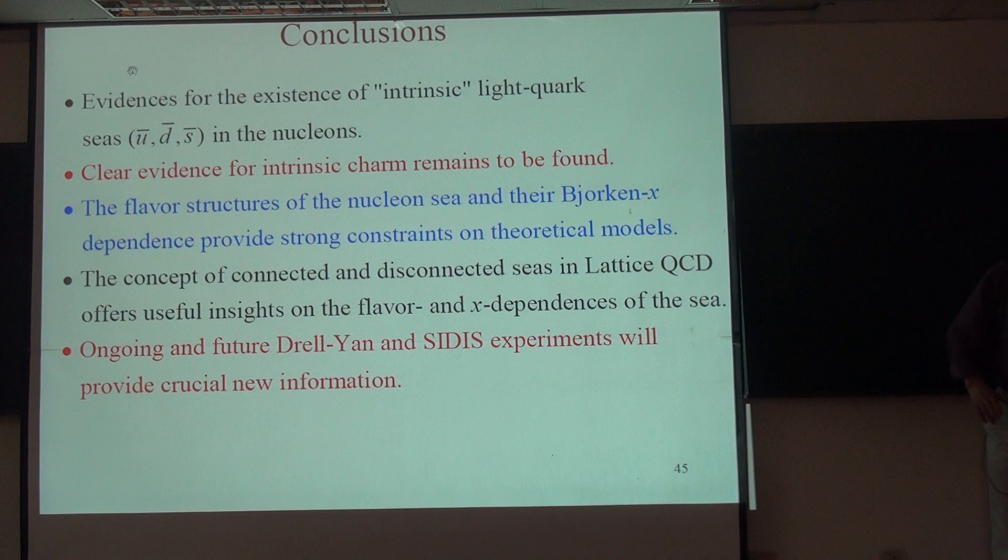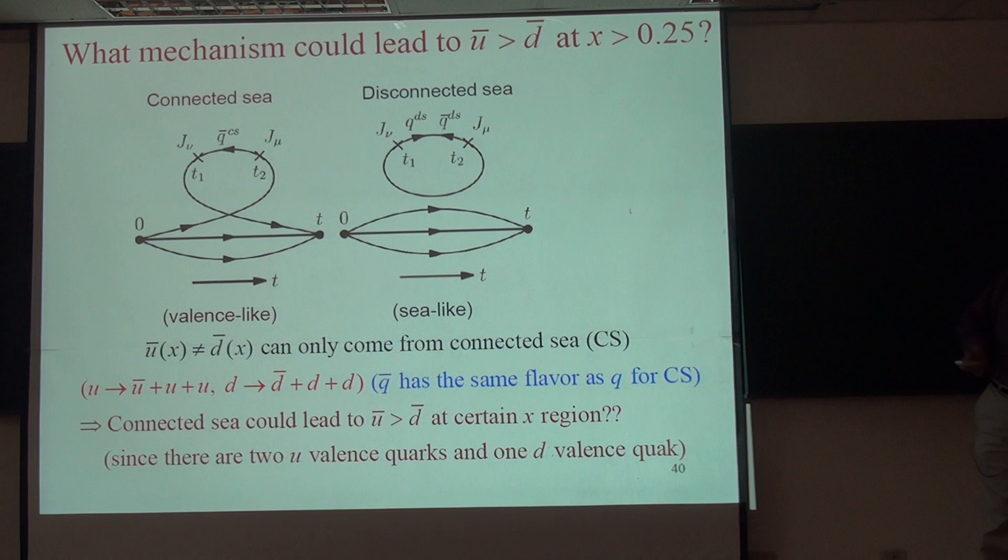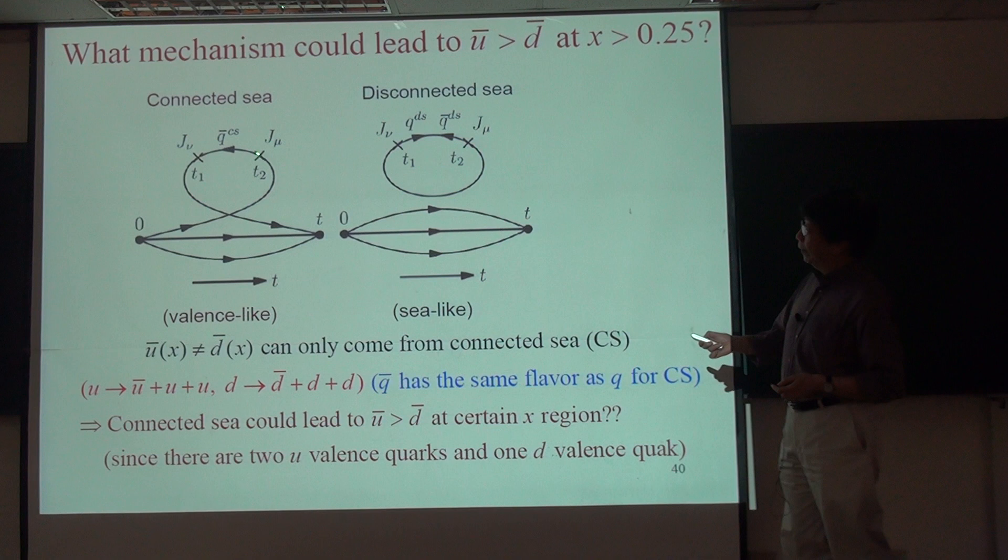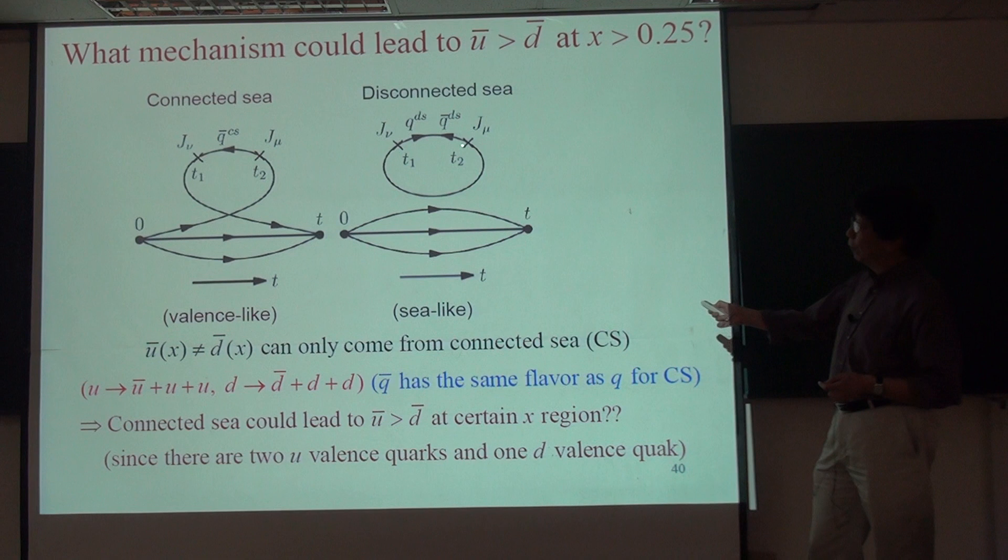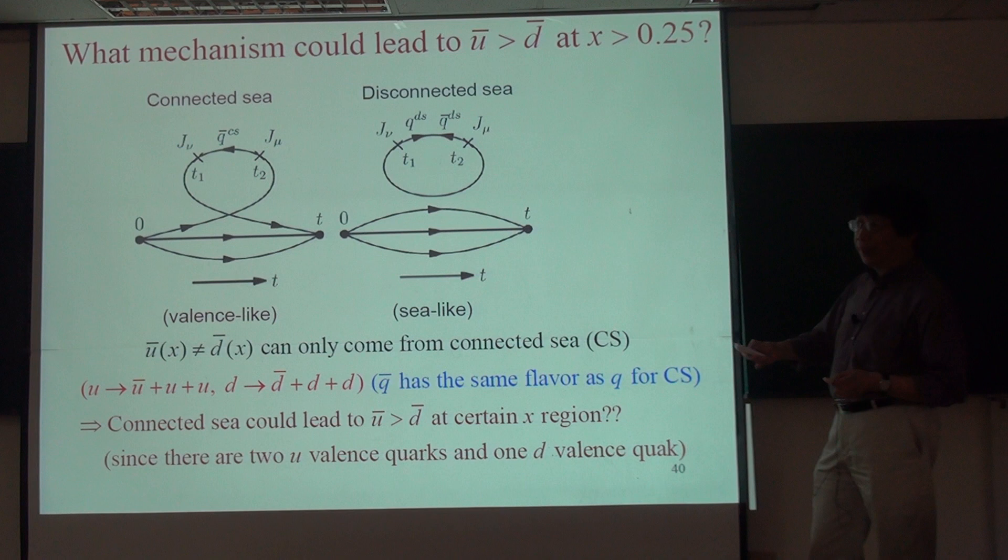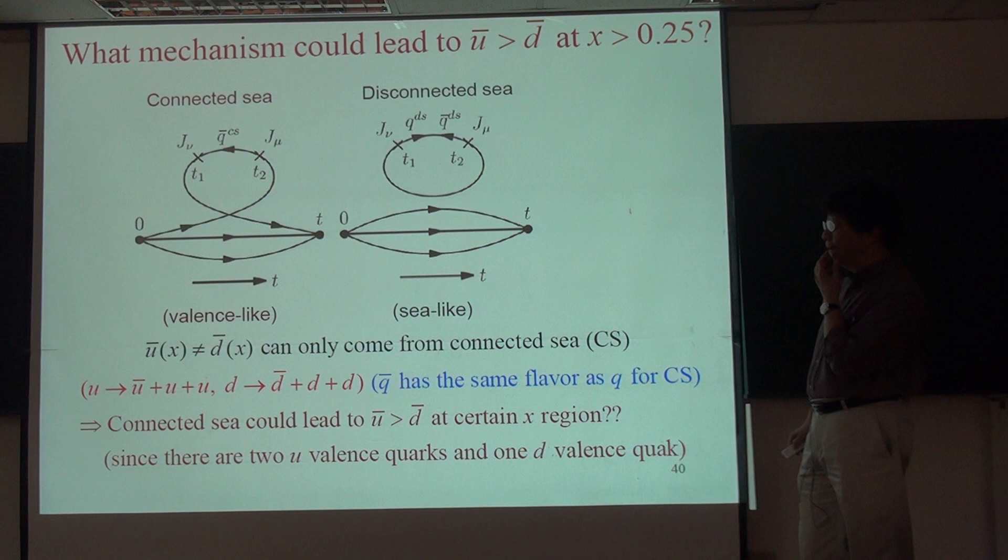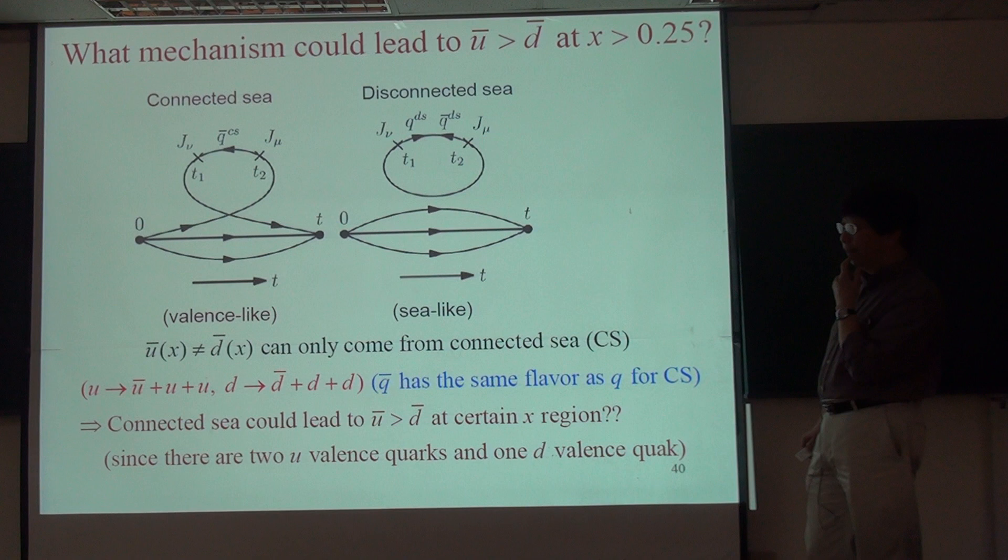Therefore, I saw the lattice calculation is for the connected one. But the lattice calculation used it was for the connected one. Don't distinguish that. Yeah. If you look at the nature of the two contribution to the C, you can see that this is pretty much flavored line. We did U-bar nest D-bar. Exactly. Therefore, this should give you zero to the first order. This, on the other hand, since you have two U-bar here and one D-bar here, therefore, it's entirely impossible that you have difference between U-bar and D-bar here.